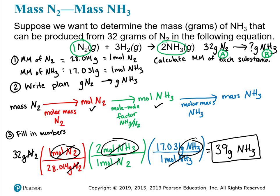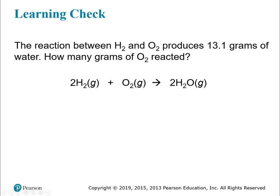Let's do another. The reaction between hydrogen gas and oxygen gas produces 13.1 grams of water. How many grams of oxygen react? Rephrased: 13.1 grams of H₂O — how many grams of oxygen is that? First, calculate the molar masses of the two substances in our question.